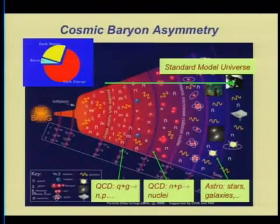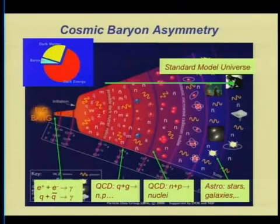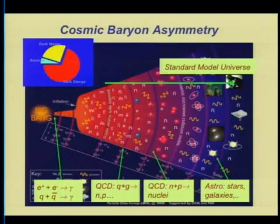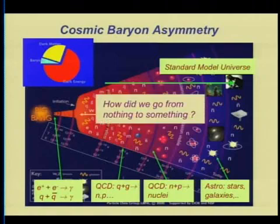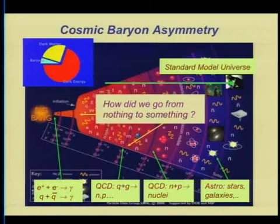To put this in context: why is the origin of matter a problem? We think that at the Big Bang the universe was most likely matter-antimatter symmetric — equal numbers of positrons and electrons, or quarks and antiquarks, annihilating back and forth. By the time we got to the 10-microsecond era when confinement occurred in QCD, there had to be more quarks than antiquarks. How did we go from a democratic situation to an imbalance? That's the origin of matter problem.